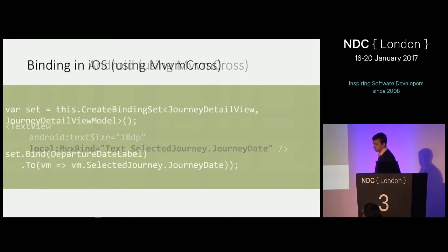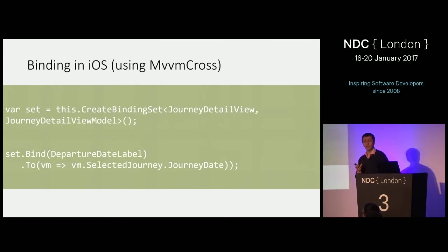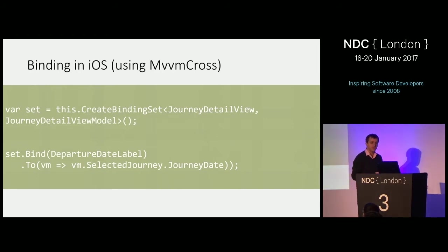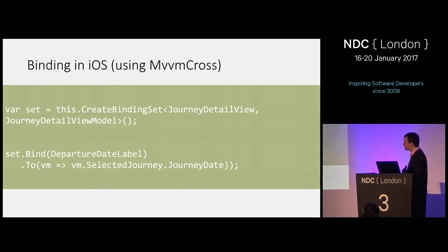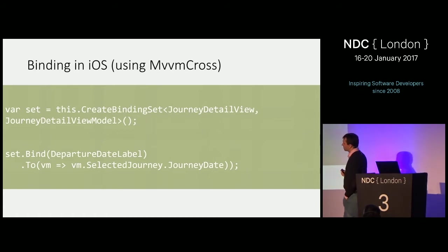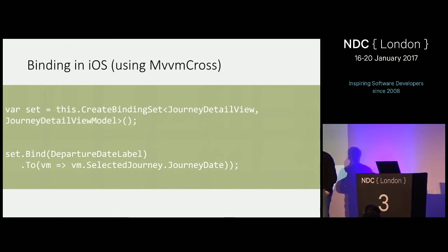Xamarin iOS is different — you can use storyboards, but you shouldn't be editing them directly in XML. You can't declaratively create data bindings in Xamarin iOS. However, the creators of MVVM Cross made it possible to do data bindings in code-behind, in C# code in the controller. We write code that creates a data binding between the view and an object — the view model. Through MVVM Cross, this becomes possible and enables automatic synchronization.